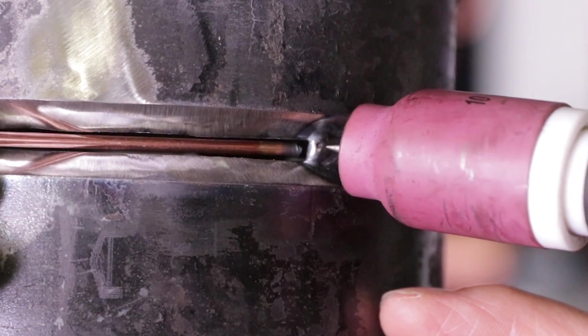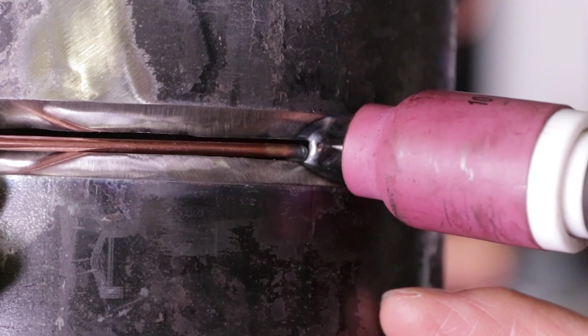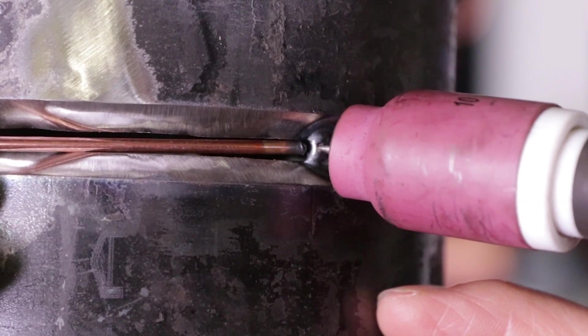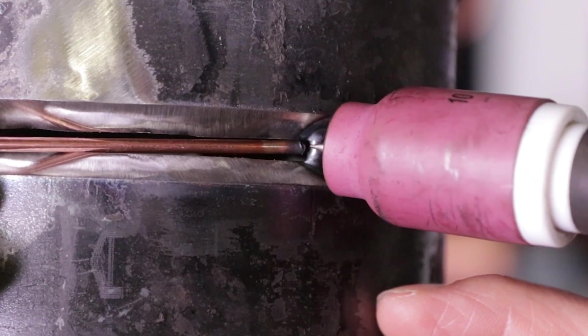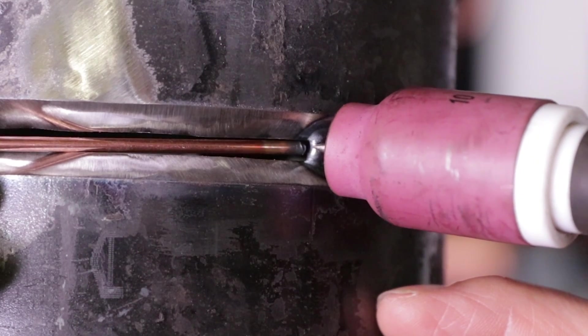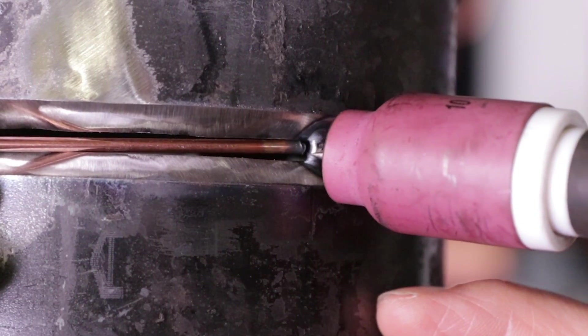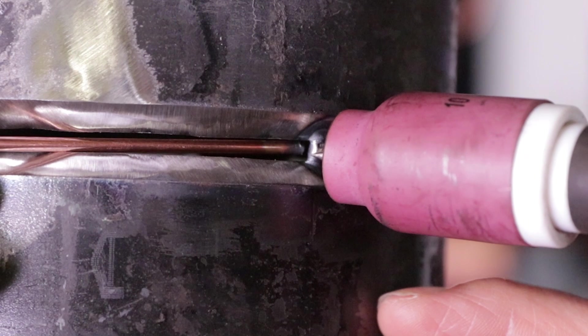A common mistake many people do is they'll get ahead of themselves and they'll start pointing the tungsten right at the tip of the rod. And all you're doing right there is you're shooting the arc straight at the tip and the tip is just going to bubble and drip. That's when it drips.